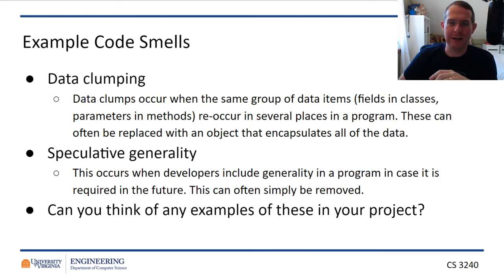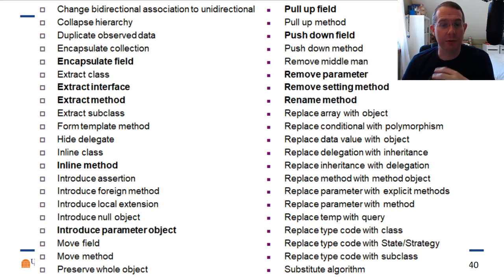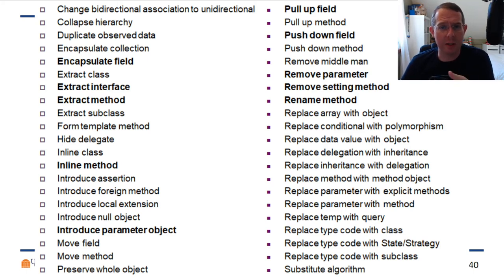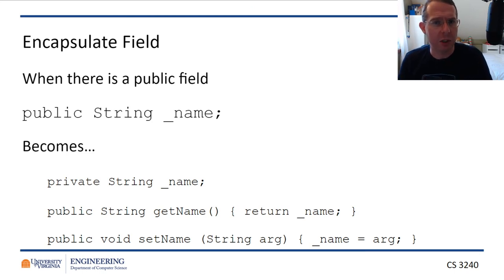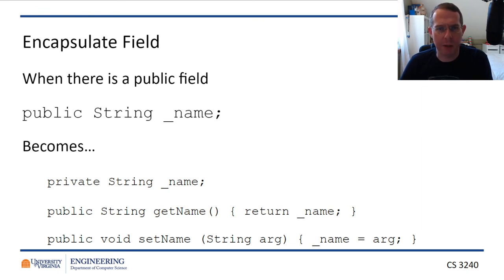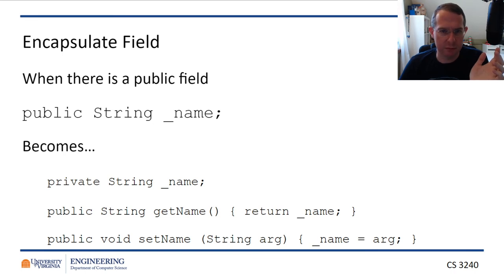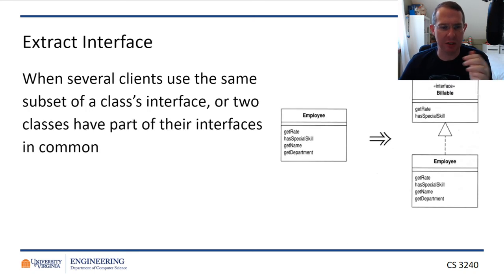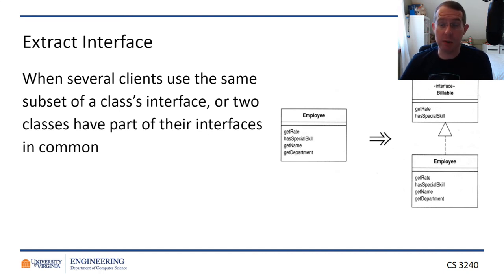There are a bunch of code smells — I'm going to go through a few. Encapsulating a field: having a public field is a bad idea. You want to make it private — this is a day-one Java lesson: private fields with accessors so you can protect that field and make sure it doesn't get changed inappropriately. Extract an interface: if you have a concept like 'billable' that multiple instances might need, maybe you need to pull that out so you can implement it in multiple classes.